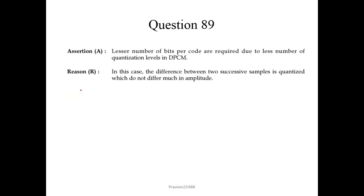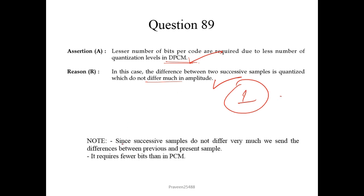Question 89. Less number of bits per code are required due to fewer quantization levels in DPCM. DPCM is Differential Pulse Code Modulation. In this case, the difference between two successive samples is quantized, and successive samples do not differ much in amplitude. Reason and assertion are both correct, and the reason explains the assertion. Since successive samples do not differ very much, we send the difference between previous and present samples, requiring fewer bits than in PCM. So we choose option 1.